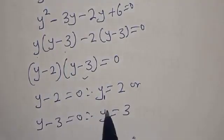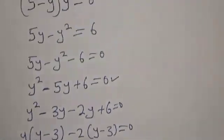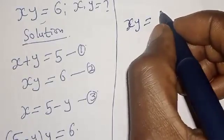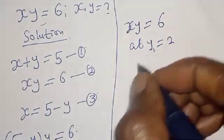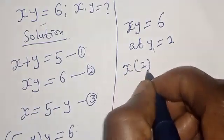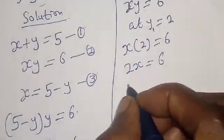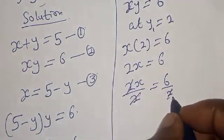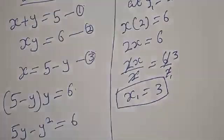Now we want to find the value of s. We've gotten the value of y but we don't know the value of s. Let's substitute for y in equation 2. Our equation 2 gives us s y is equal to 6. At y equal to 2, that is y1, we have s into 2 is equal to 6. So 2s is equal to 6. Let's divide both sides by 2. Therefore s1 is equal to 3.